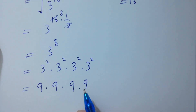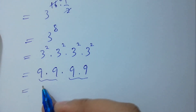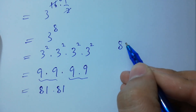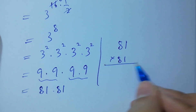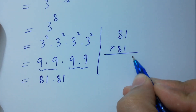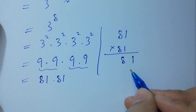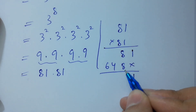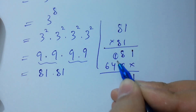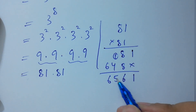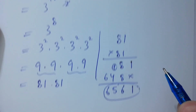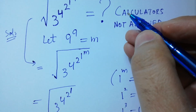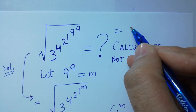We have 9 times 9 equals 81, and 81 times 81. Multiplying: 1 times 1 is 1, 1 times 8 is 8, 8 times 1 is 8, 8 times 8 is 64. Adding: 8 plus 8 is 16, write 6 carry 1, then 4 plus 1 is 5, giving us 6561. So the square root of 3 to the power 4 to the power 2 to the power 1 to the power 9 to the power 9 equals 6561.